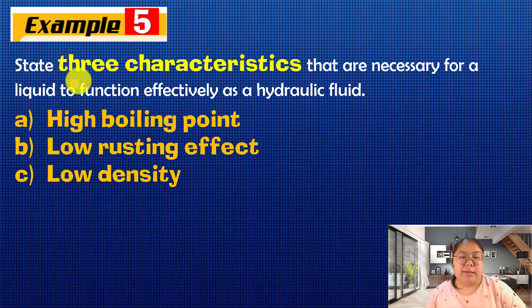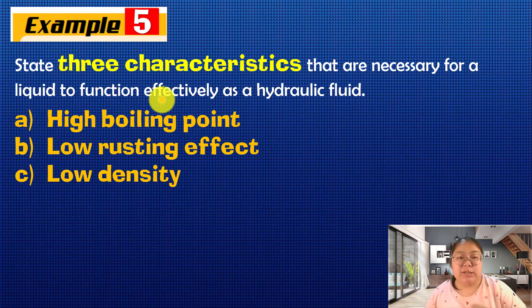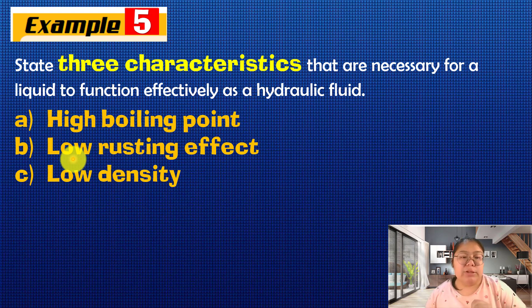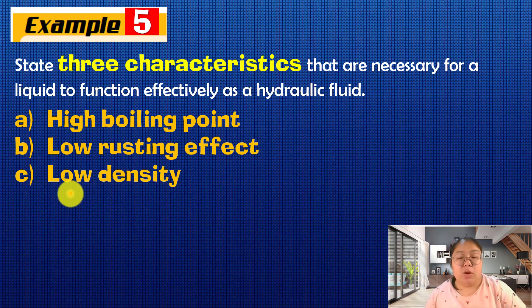Three characteristics required for hydraulic fluid: first, high boiling point — the liquid must not boil easily even at high temperatures, remaining in liquid form; second, low rusting effect — it must prevent rusting in the hydraulic system; third, low density — lower mass makes it easier to be used.